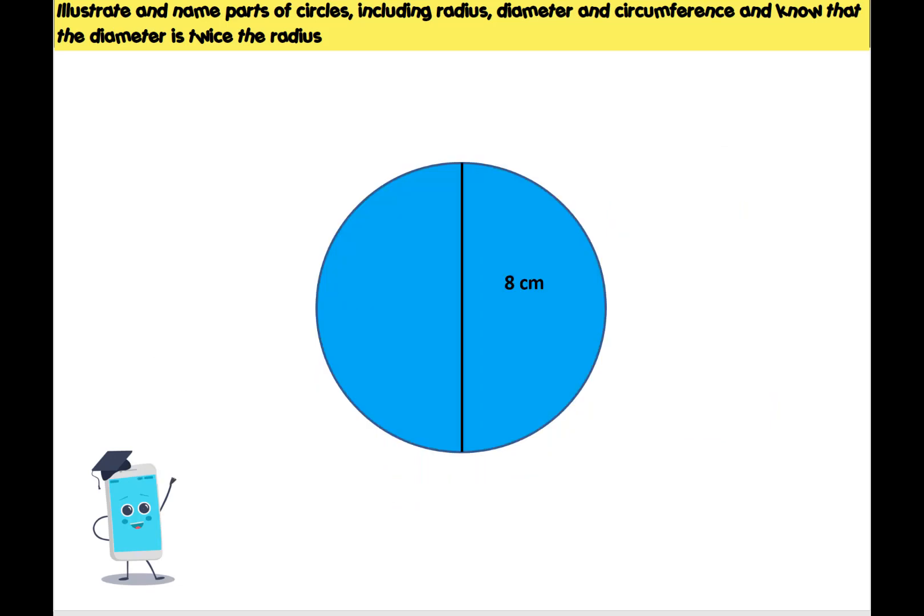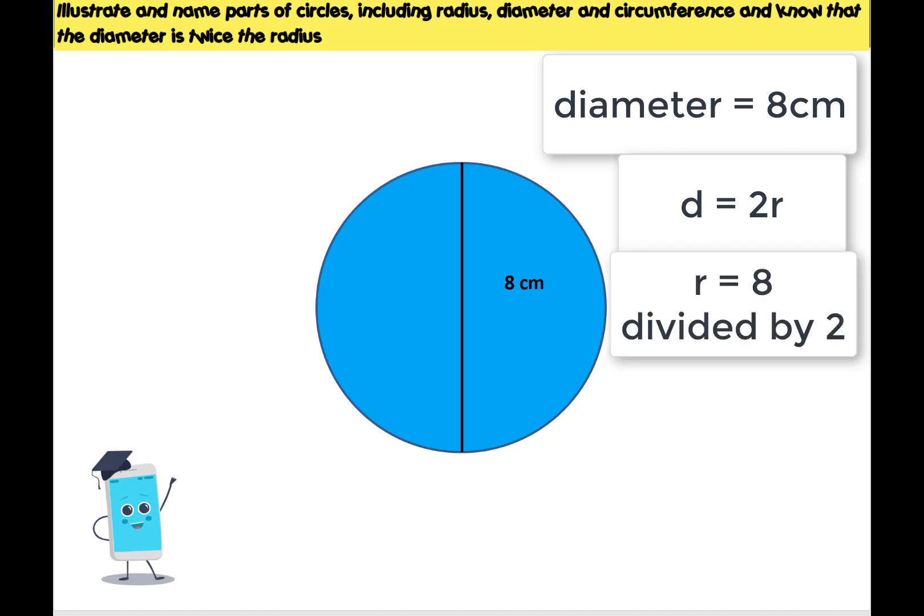So this time I need to find the radius and my circle has been labelled with a line that's cutting it in half, which says 8 centimetres. So what is the name of that line? It is running from one edge to the other and it's going through the centre. It's cutting the circle completely in half. This line is our diameter. So if I know that my diameter is 8 centimetres, how can I use this to find my radius? Well, my radius is half of my diameter because my diameter is double my radius. So I just need to do 8 divided by 2 to get my radius, which is 4 centimetres.